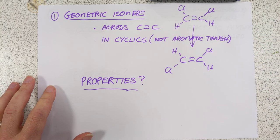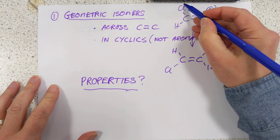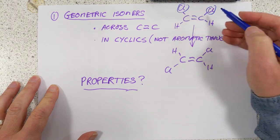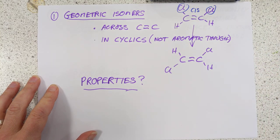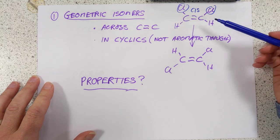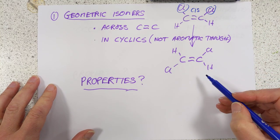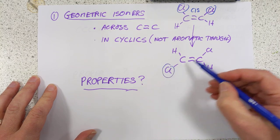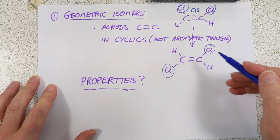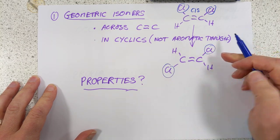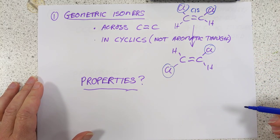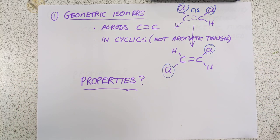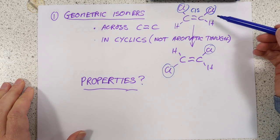When we have the substituents on the same side of the double bond, we call this the cis isomer. So this is cis-1,2-dichloroethene, and this is trans-1,2-dichloroethene, because the two substituents are on opposite sides — they're across the double bond. So geometric isomers exist, and this is where they happen.